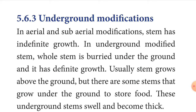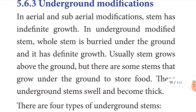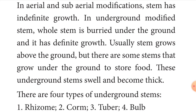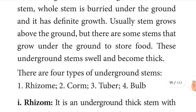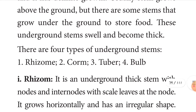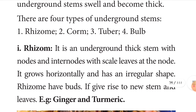Next we are going to learn a very important topic — underground modification. This is a five-mark question children. In aerial and sub-aerial modification, the stem has indefinite growth. In underground modified stems, the whole stem is buried under the ground and has definite growth. These underground stems swell and become very thick. There are four types: rhizome, corm, tuber, and bulb.